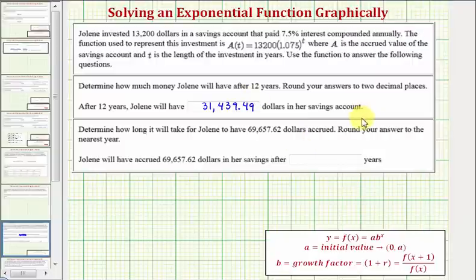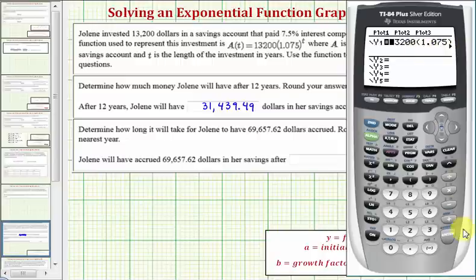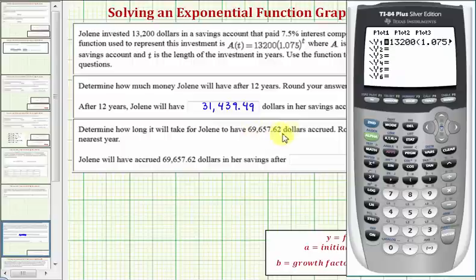And now for the second question, we want to determine how long it will take for Jolene to have $69,657.62 in her account, and we're asked to round to the nearest year. And because we'll be solving this graphically, we'll go back to the calculator, and we'll press Y equals, and because we already have A of t in Y1, we'll press enter, and for Y2, we'll enter the desired account balance, so we'll have Y2 equals $69,657.62.